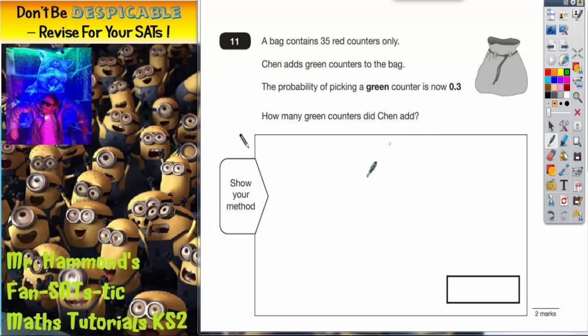Well, after these green counters have been added, we know that the probability of picking green is 0.3. Another way of saying 0.3 is 3 tenths.